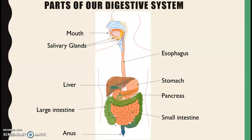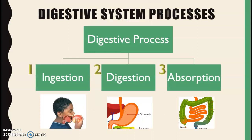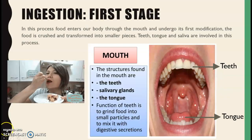As we have already reviewed the parts of our digestive system, now we can talk about the digestive process. This process can be divided into three main stages: ingestion, digestion, and absorption. In this class you will learn about ingestion and digestion; next class we are going to learn about the absorption process. Ingestion is the first stage.